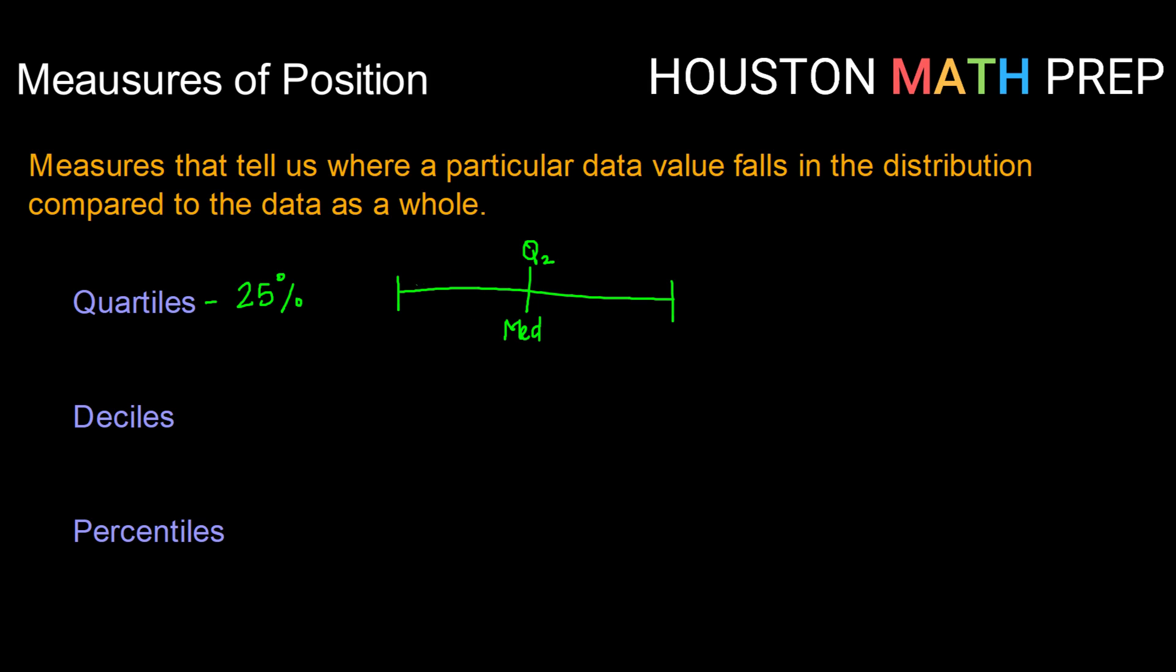If you took the bottom half and cut it in half again, that would give you Q1. That means that would be the value that borders the bottom 25%. The median, of course, covers 50% or the middle.